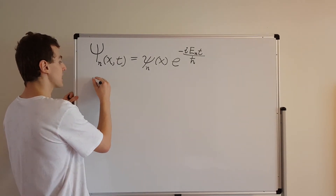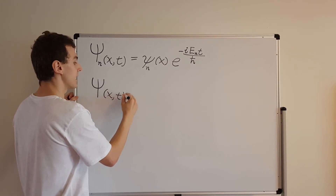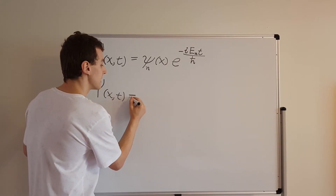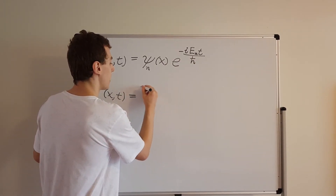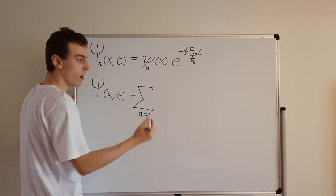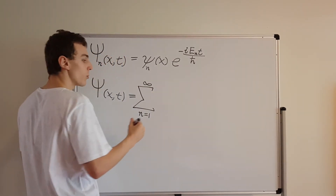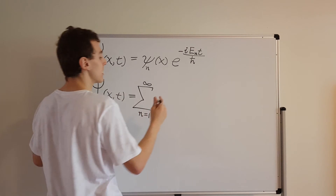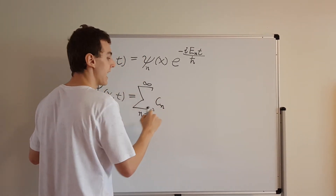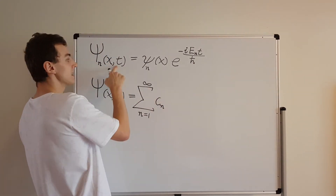So the general solution is going to look like this. Ψ(x, t) depends on position and time, and this is equal to the sum over index n from 1 to infinity — because this is an infinite set of solutions. We sum over them with constants c_n, where c_n is the constant associated with the nth separable solution. So here we have Ψ_n(x, t) — the nth version of the separable solution.